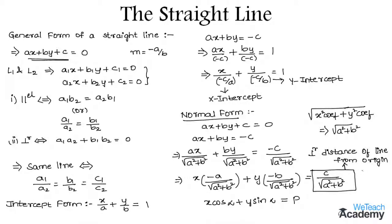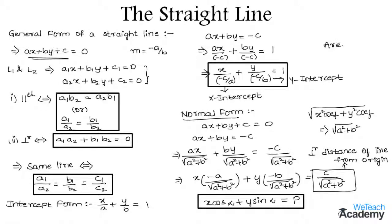Now let us discuss the formula for the area of a triangle formed by the line ax + by + c = 0 with the coordinate axes, which is given by (1/2) × |c²/(ab)|. The area of a triangle formed by the line in intercept form x/a + y/b = 1 is given by the formula (1/2) × |ab|.